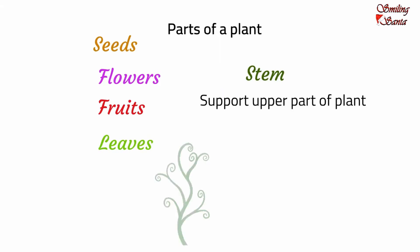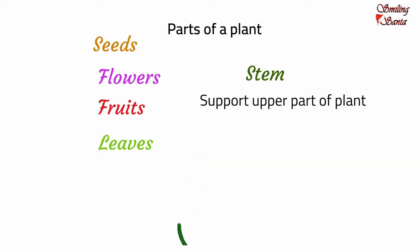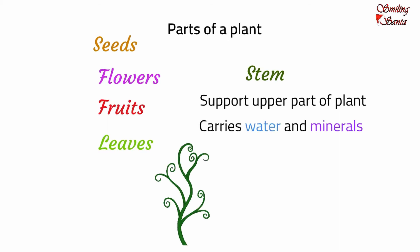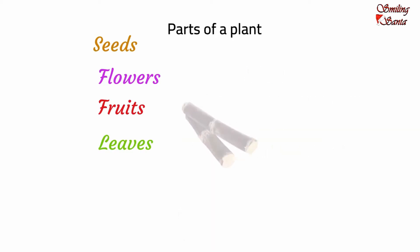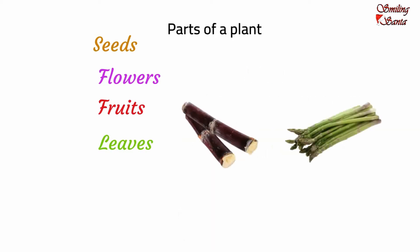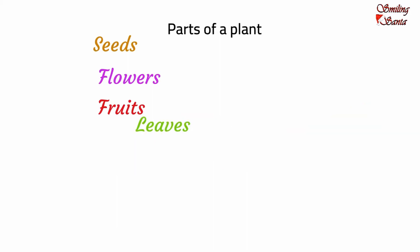The stems support the upper part of the plant to stay upright. Some plants have hard stems and some have soft stems. The stem carries water and minerals from the roots to other parts of the plant, and food made in the leaves to other parts of the plant. Sugar cane and asparagus are some of the stems that we eat.